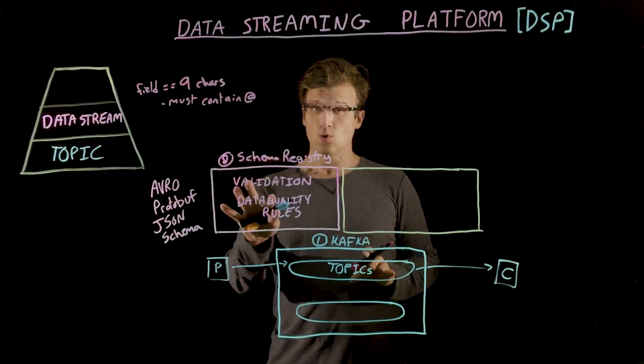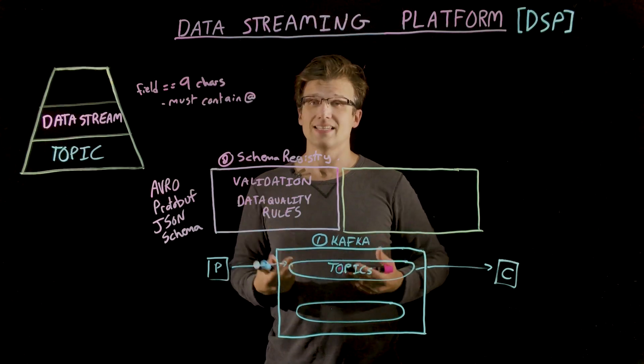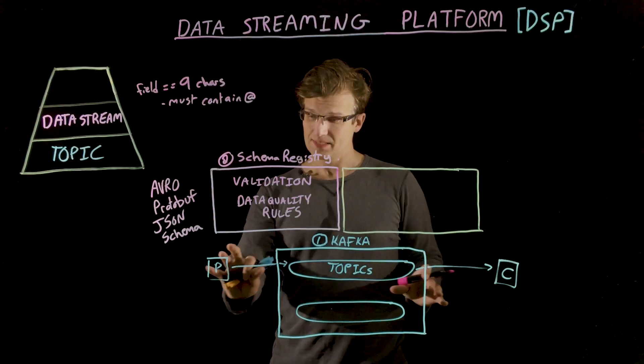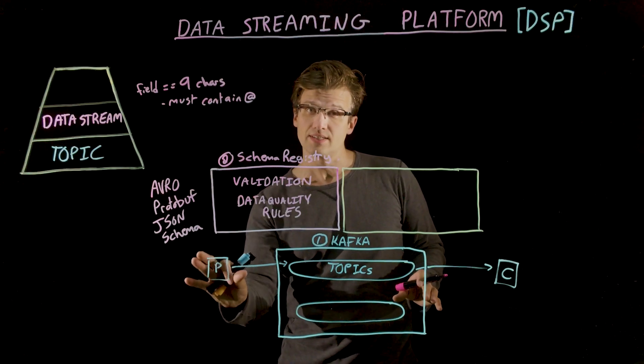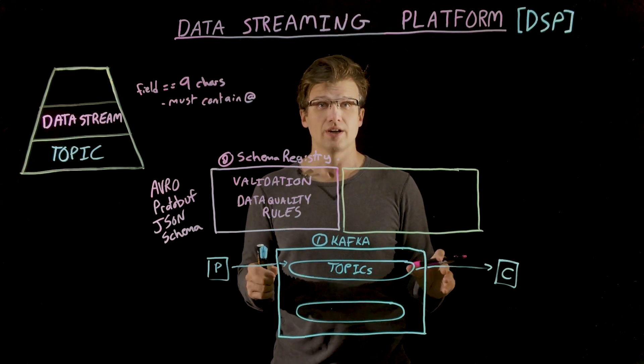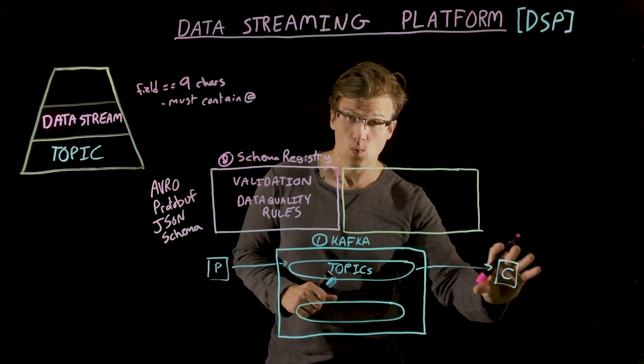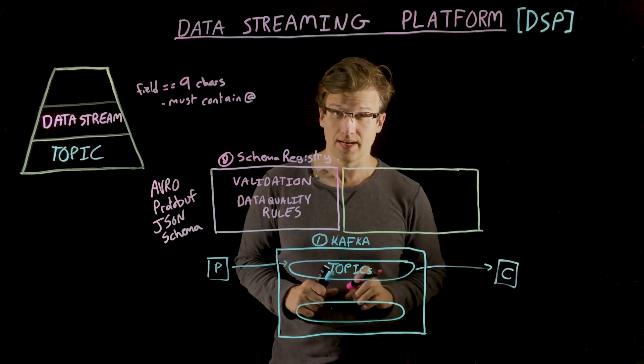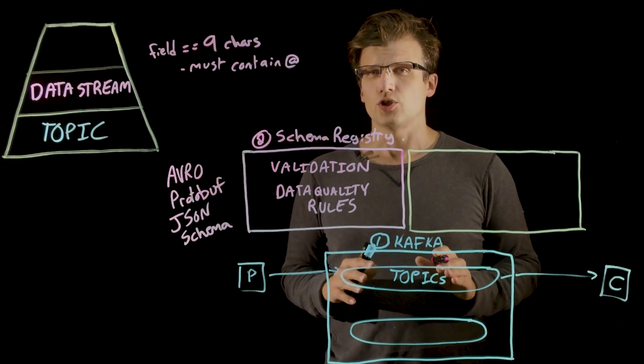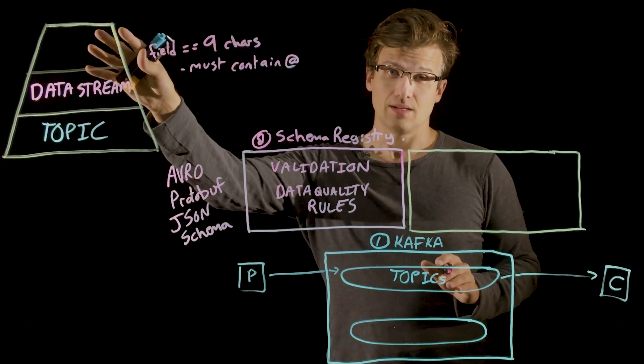Schemas, data quality rules, and data validation provide us with the basis of what we call a data contract. Data contracts provide the guarantees between the producers of this data and the consumers to ensure that they have a common understanding of what to create and publish and what that'll look like when they read it and use that data. The best data streams all use data contracts, but we need just a bit more to graduate a data stream to the top level data product.